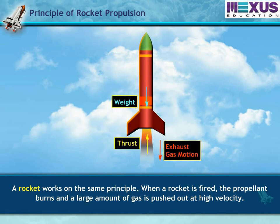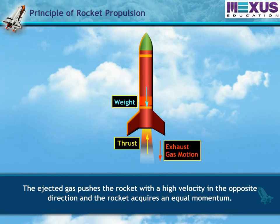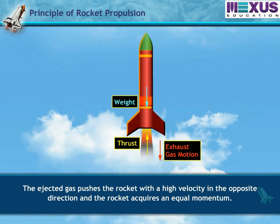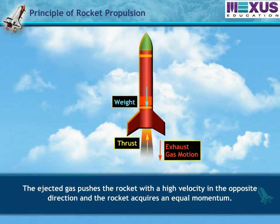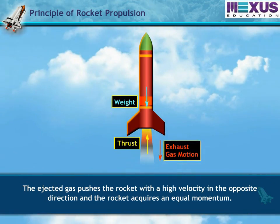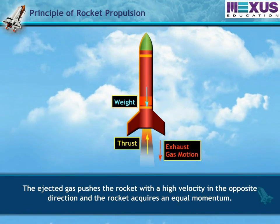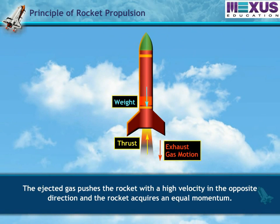When a rocket is fired, the propellant burns and a large amount of gas is pushed out at high velocity. The ejected gas pushes the rocket with a high velocity in the opposite direction, and the rocket acquires an equal momentum.